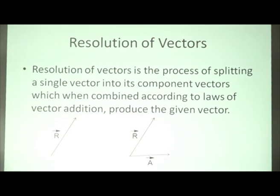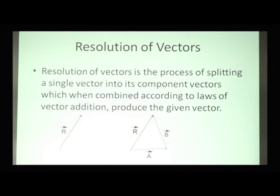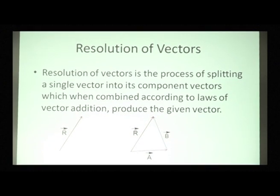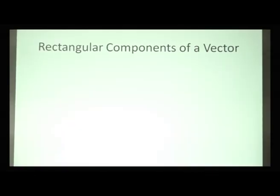Let's take a vector r. As you can see, vector a and vector b are the components of this given vector r. These two component vectors a and b, and the given vector r, obey triangle's law of vector addition. The two vectors are in the same order and the given vector is in the reverse order, so they form a perfect triangle and obey triangle's law of vector addition. Now let's look at the rectangular components of a vector.